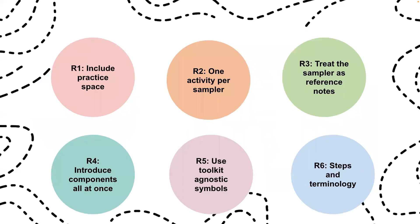From these three studies we provide the following recommendations for samplers — you can find more details in the paper. One, include practice space. Two, one activity per sampler. Three, treat the sampler as reference notes to describe each activity. Four, introduce components all at once at the beginning. Five, use toolkit-agnostic symbols when possible. Six, include numerical and alphabetized steps and terminology.